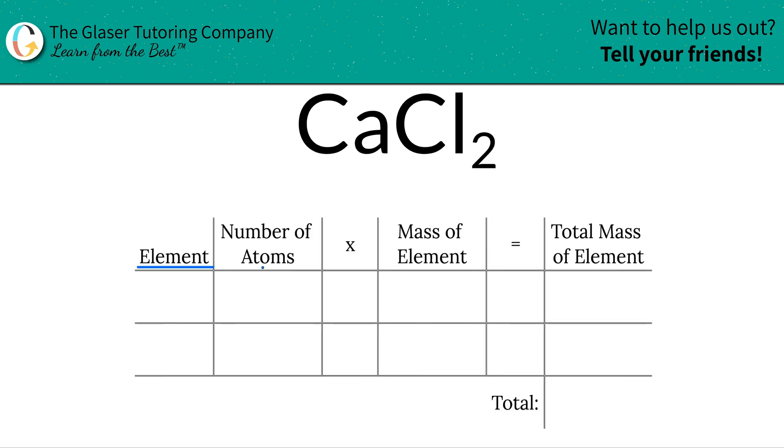So the first thing I'm going to do is write down the elements I see in the compound. So we see calcium, and we see chlorine. Then I'm going to write down the number of atoms. This is where the subscripts come into play. At the bottom of calcium there is an invisible one, and that means there's one calcium. And chlorine has a subscript of two, and that means there are two chlorines.